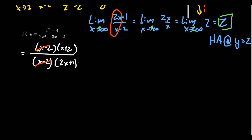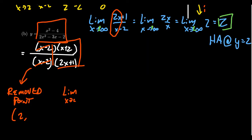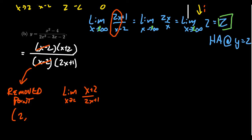Notice there is a common factor of x minus 2, which tells us the graph has a removed point. That removed point occurs at x equals 2. To find the y-coordinate, we take the limit as x approaches 2 using the simplified form x plus 2 over 2x plus 1. Plugging in 2 by continuity gives 4 over 5, so there is a removed point at (2, 4/5).